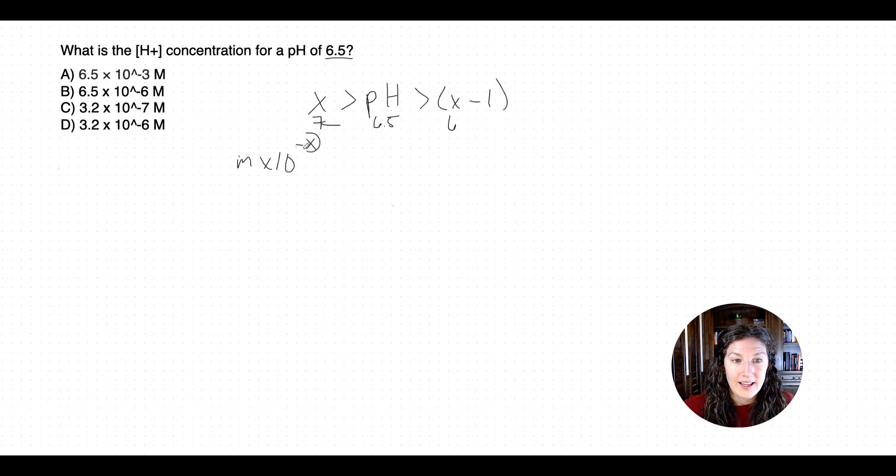Now x, the x that we're looking for is going to be this bigger number. So we know that our exponential value for this H plus concentration has to be 10 to the negative 7. Now we also know that our mantissa has to be greater than 1 but less than 10, because that was our rule to use this calculation in the first place. So what we're looking for is an answer choice that puts the mantissa as greater than 1 and less than 10, so it's somewhere in between 1 and 10, and our exponent as 10 to the negative 7. And check on that, we only have one answer that matches that, which is C.